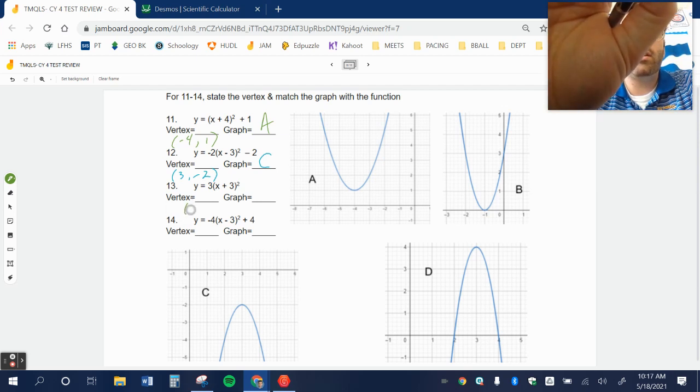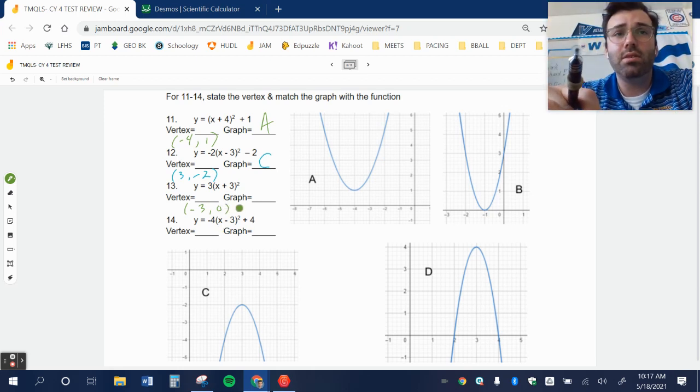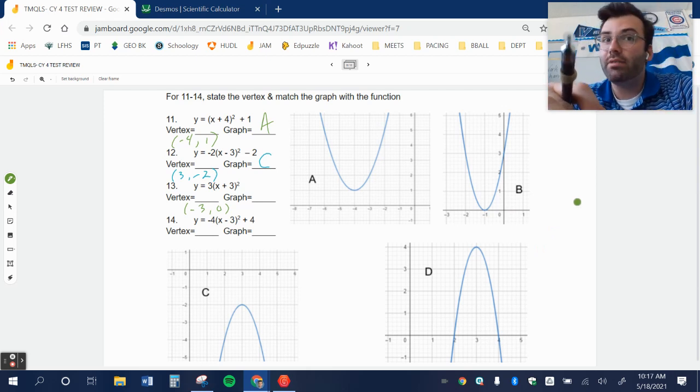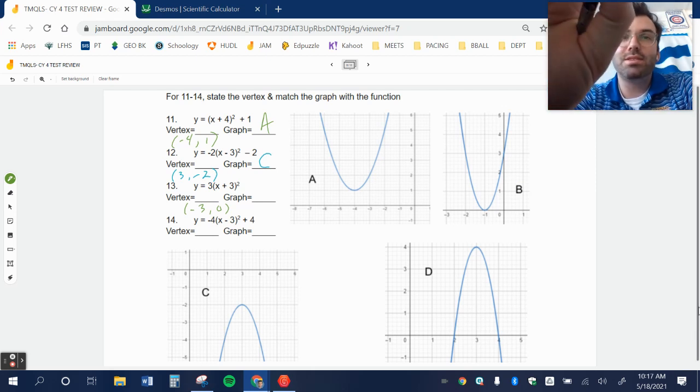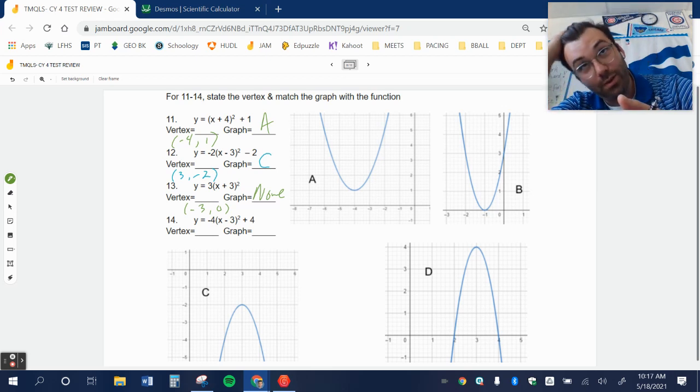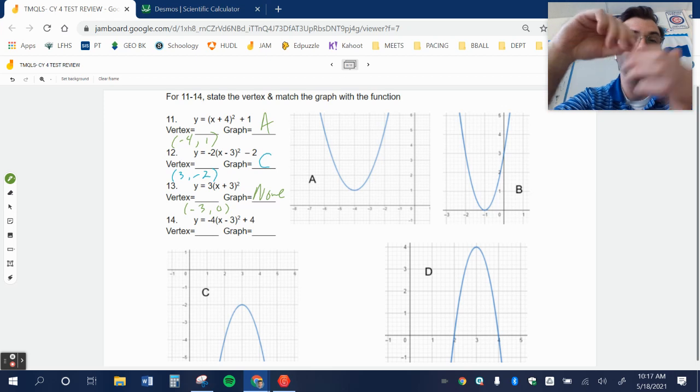Next one, opposite of positive 3 is negative 3. There is not a number added on the outside, so I can assume that is 0. So I look for the one at 3 comma 0. Doesn't look like any of these are in that one. So that's really tough. It should have been B, but we'll just say none for that. I can promise you that it will match up when it comes to the test.